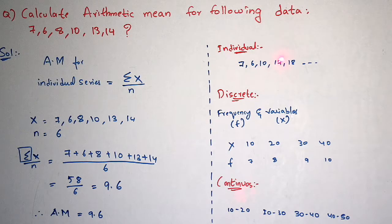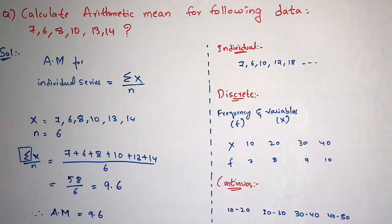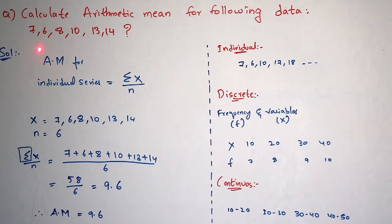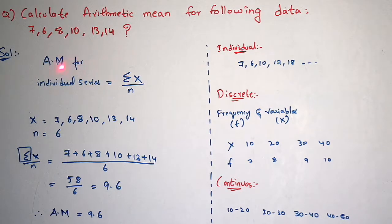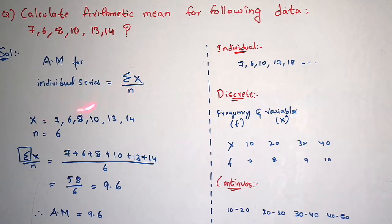In this video I am going to explain individual series — remember these three types. Coming to this question, it belongs to arithmetic mean of individual series because the given data is in linear form consisting of only variables with no frequency.